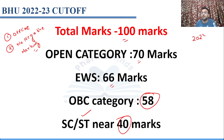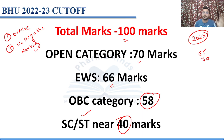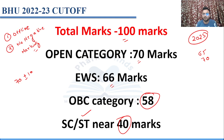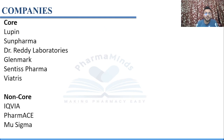This cutoff is not fixed. For example, if you're giving the 2023 exam and the cutoff turns out to be 65 instead of 70, that's because this data is from last year and can vary. The cutoff can be 70 plus or minus 10 — it could be 60, it could be 80. This is just to give you an idea of the range.